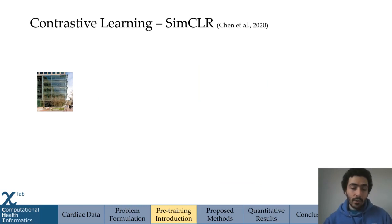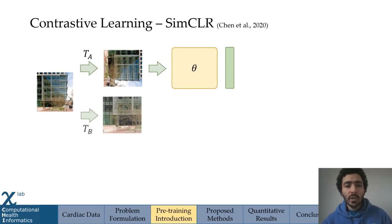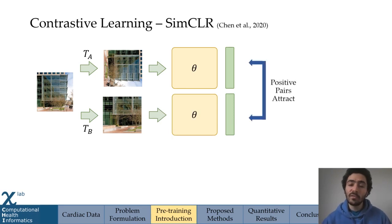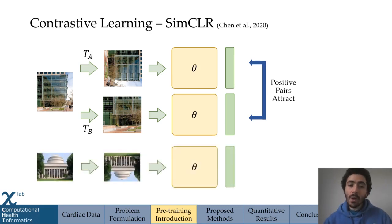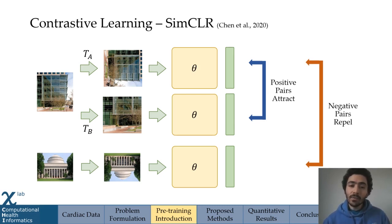If you don't have access to abundant labels, you can leverage self-supervised learning, an example of which is contrastive learning. SimCLR was introduced by Chen et al., and if you have an image, it applies a class-preserving transformation such as a rotation and obtains its representation. You then apply a different transformation and obtain its corresponding representation — these form a positive pair, and we attract them to one another because they belong to the same original image. If you have a different image and obtain its representation, these form a negative pair and we repel them from one another. At a high level, contrastive learning is a sequence of attractions and repulsions.